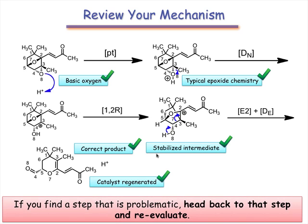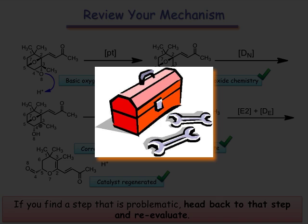In practice, it's a good idea to evaluate your mechanisms step by step. If you encounter a problematic step, systematically return to it and re-evaluate. Atom mapping and a bonds made and broken table are two powerful tools that you can use to help solve mechanisms. As you attempt to solve the mechanisms from this lesson, a systematic approach is essential. Use the tools provided in this lesson, along with your existing chemical knowledge, to give yourself an advantage while solving mechanisms.